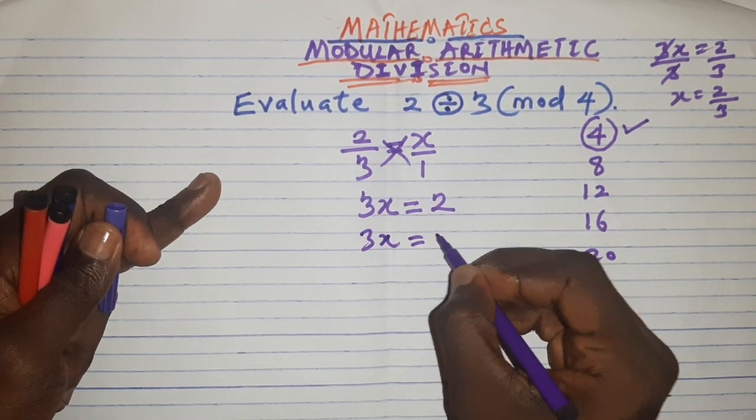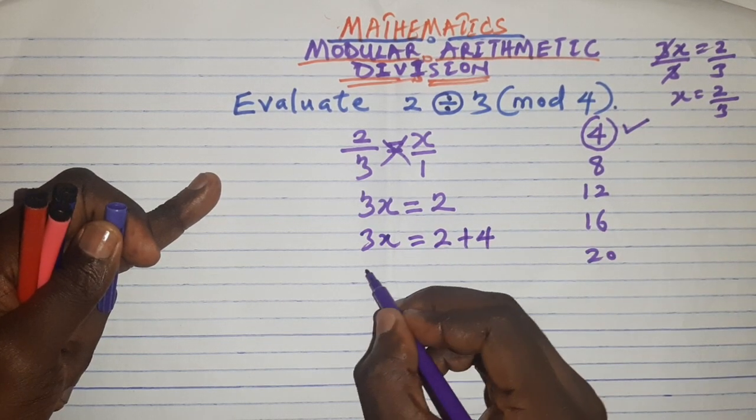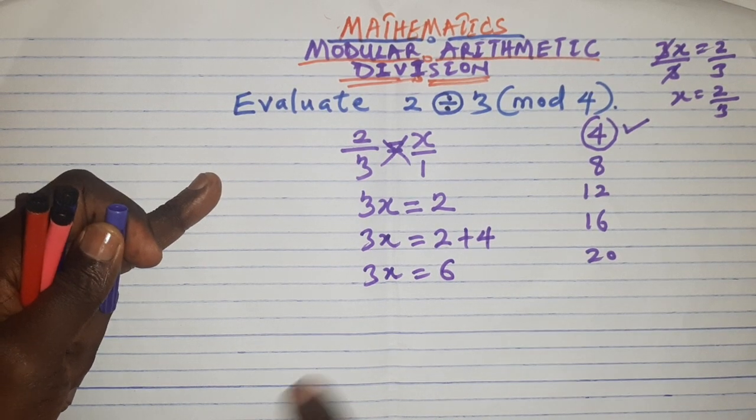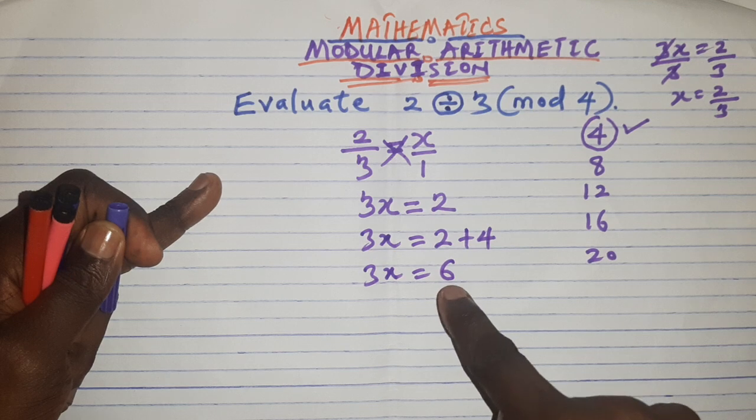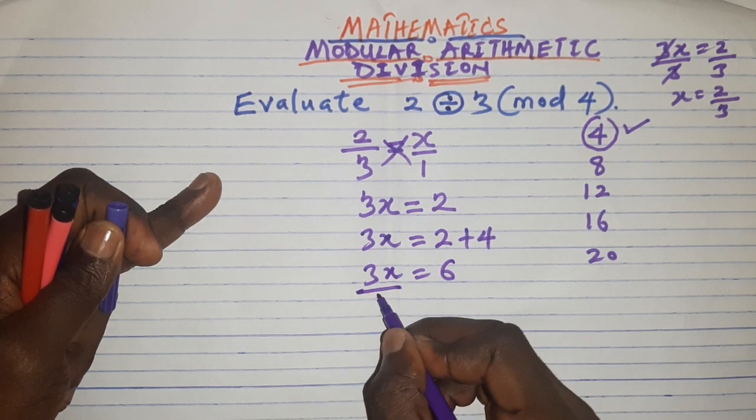So it becomes 3x equals this 2 plus the 4 I choose, plus 4, then I'll get 6. Then 3x equals 6. And now it is looking very okay because I can now divide both sides by 3, and I'll end up dividing the 6 by 3. 3 can divide 6 without remainder.